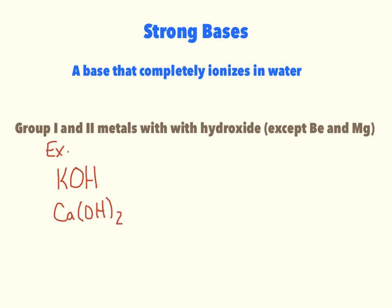Strong bases are like strong acids in that they completely dissociate or ionize in water. The strong bases are the group 1 and group 2 metals that have hydroxide on them, with the exception of beryllium and magnesium — those would be weak bases. For example, potassium (group 1) with hydroxide: the charges cancel out and you write it as KOH, potassium hydroxide, which completely dissociates in water. Calcium hydroxide is different — calcium is group 2 with a +2 charge, so you crisscross to get Ca(OH)₂, taking OH two times.